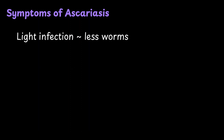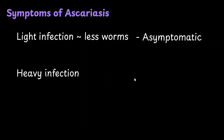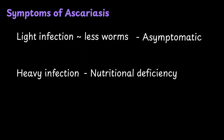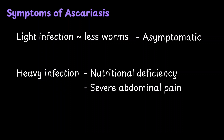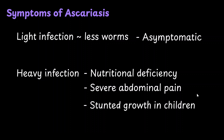Now, what symptoms do you see in ascariasis — the infection caused by excess Ascaris lumbricoides in the body? In a light infection with fewer worms, you would be asymptomatic. But in a heavy infection it leads to nutritional deficiency, because the worm takes nutrients from food and intestinal damage further reduces absorption. Severe abdominal pain occurs as multiplying worms cause physical blockage of the intestine. In children, stunted growth is also observed.